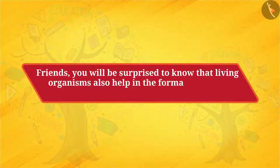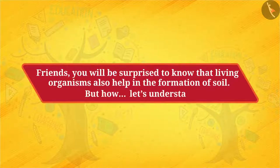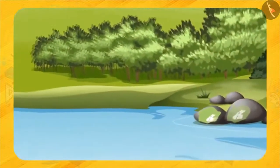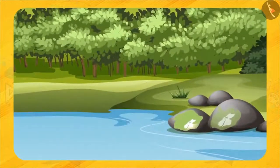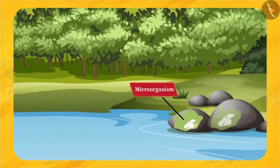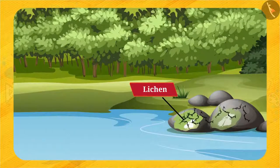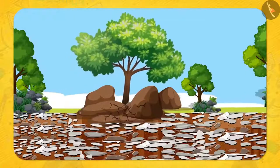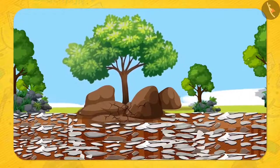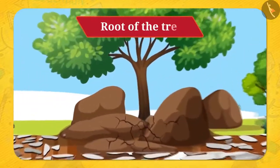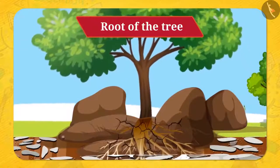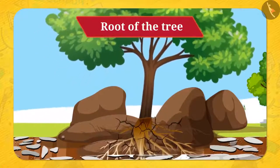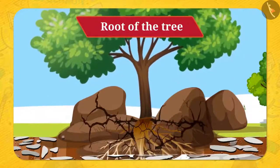Friends, living organisms also help in the formation of soil. You must have seen a green sheet on the surface of stones. This is a microorganism called lichen. It grows on the surface of stone and secretes certain chemicals which powder the rock surface and form a thin layer of soil. You must have seen many times that if a big tree is growing near a big stone, the root of the tree penetrates inside the crack already present in the stone. As the roots grow, the crack widens further and eventually breaks.